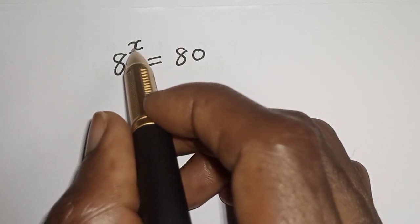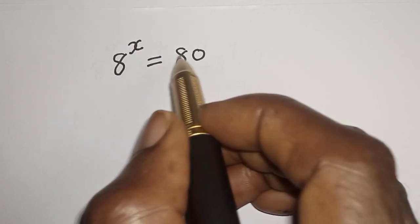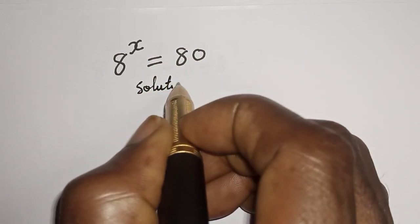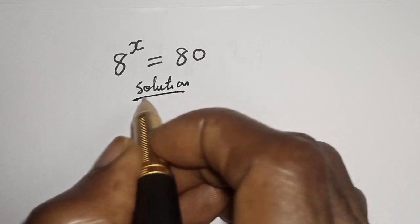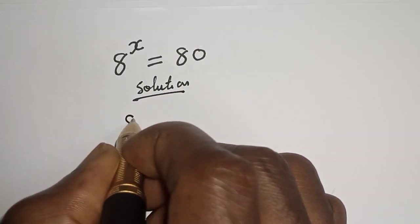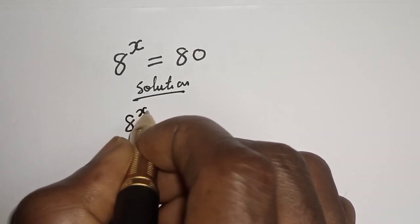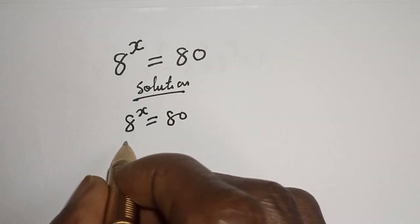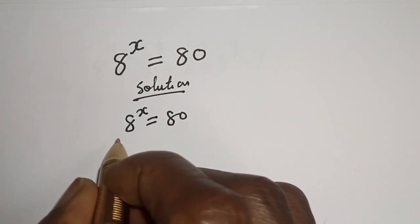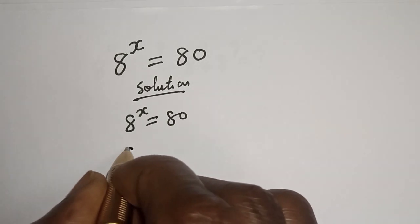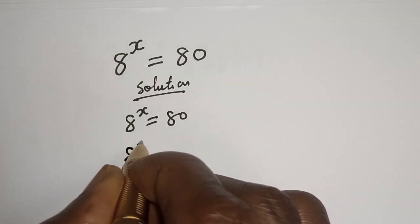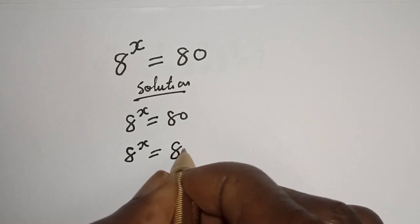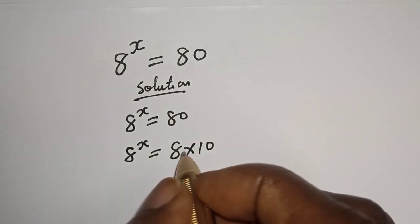But before we proceed, please don't forget to like, share, comment and subscribe. Solution: You have 8 raised to power s is equal to 80. Then 8 raised to power s is equal to 80, which can be written as 8 multiplied by 10.